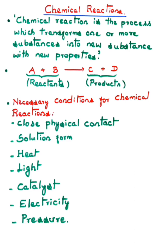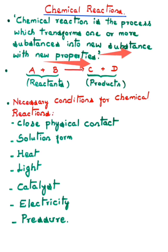A chemical reaction is the process which transforms one or more substances into a new substance with new properties. Here we can observe a chemical reaction where A and B are the reactants; they react and form products C and D.